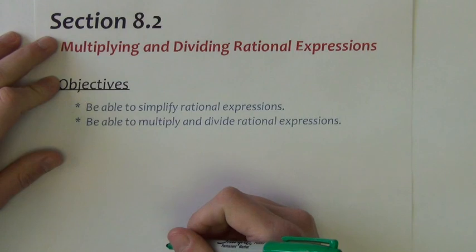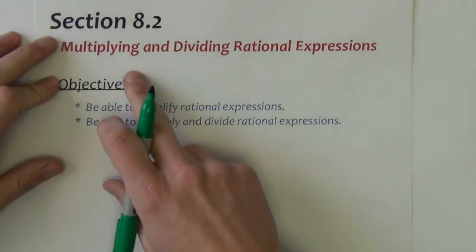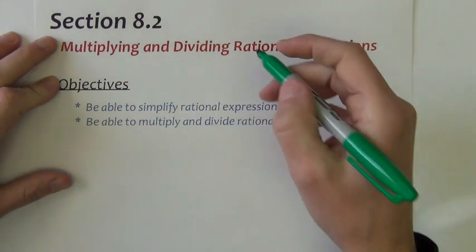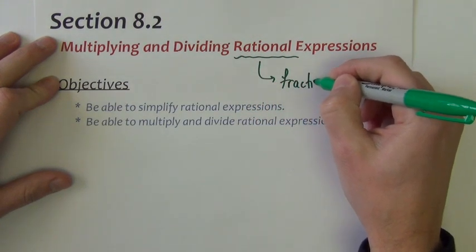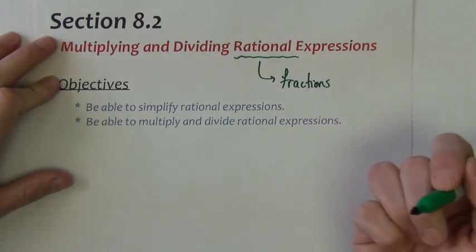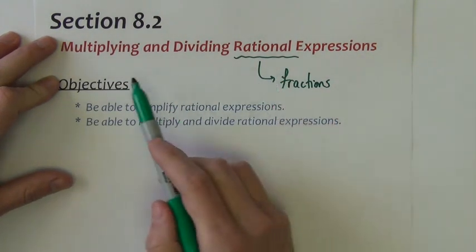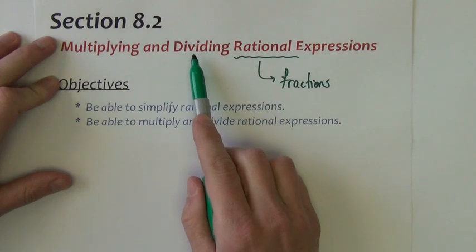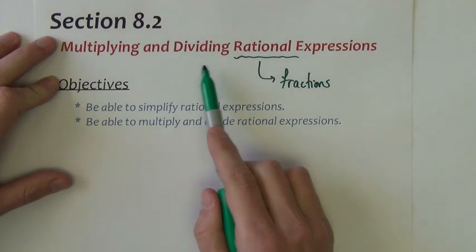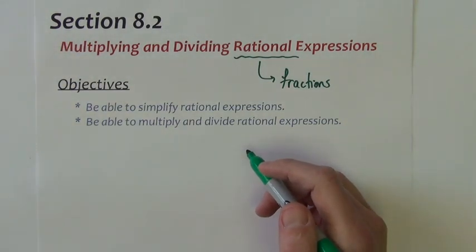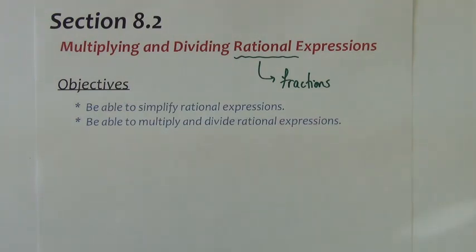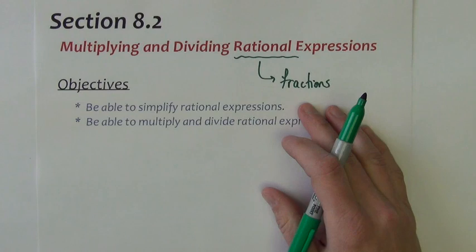In the second lesson of Chapter 8, Section 8.2, we're going to look at how we multiply and divide rational expressions. Rational expressions are essentially just another word for fractions. So we're going to look at how we multiply and divide, which will also include reducing fractions. Our fractions are going to involve expressions that have variables in them, but all the same rules we've grown up with for multiplying and dividing fractions will still apply.